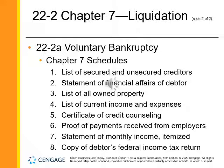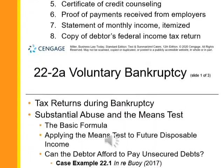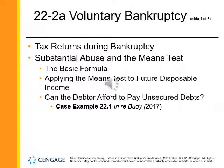The U.S. trustee is a government official who performs administrative tasks a bankruptcy judge would otherwise have to perform. In a Chapter 7 case, proceedings generally take no more than a few months, so filing a tax return during the pendency may or may not occur. In a Chapter 13 repayment plan, multiple tax returns will likely come due and must be filed.